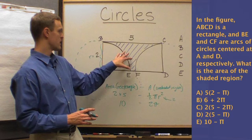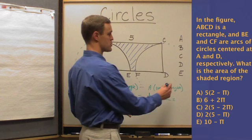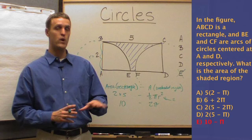The area of the unshaded region is 10, the area of the whole rectangle, minus the unshaded region. And what's left over would be the shaded region. So we go to the answer choices. It's not there. It's definitely not answer choice E, because it's 10 minus 2 pi, not just 10 minus pi. But which is the answer?